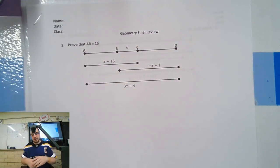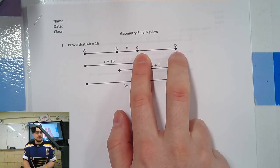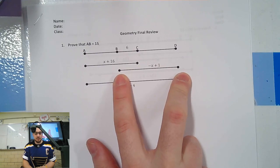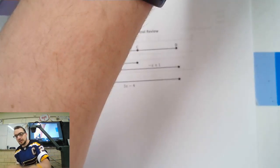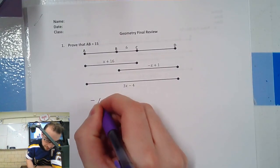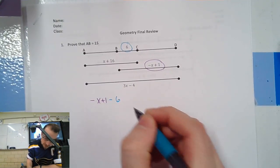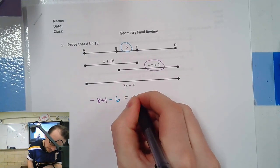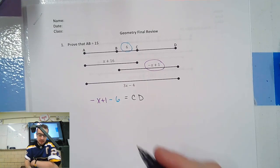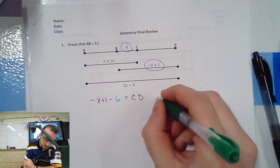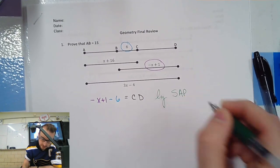First, we're given all of this stuff so we don't need to write any givens. We know that this segment minus six gets us CD. How do I know that? Segment Addition Postulate — I can put these two together and get this, so if I subtract that from this I get that. It's algebra. So we're going to use the Segment Addition Postulate. Negative x plus one minus six should equal CD. How do I know that? By SAP.